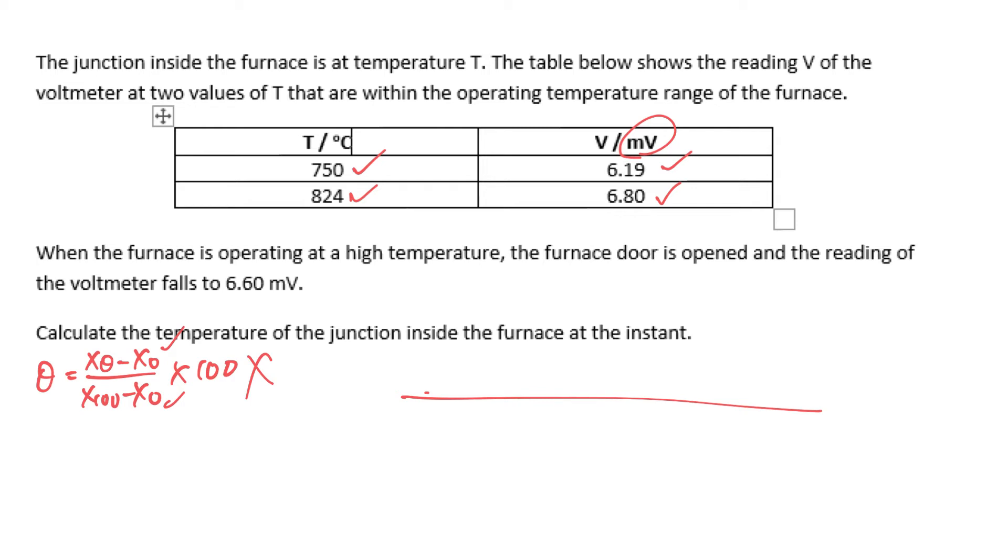Now a better way of doing it is using a temperature line, just like a number line. So you can actually write out here at 750 degrees Celsius it will correspond to 6.19 millivolt, and when it's at 824 degrees Celsius it corresponds to a voltage of 6.80 millivolt. So it's like a proportion and it's like finding gradient of a straight line.